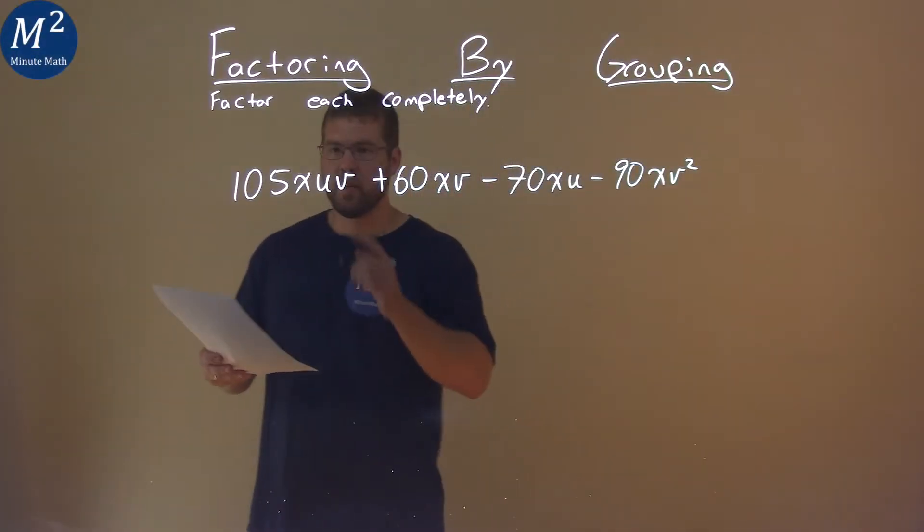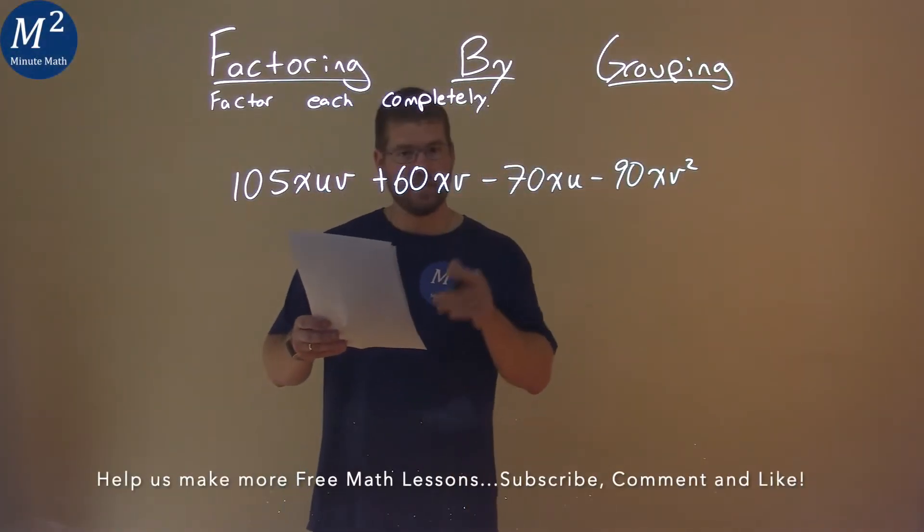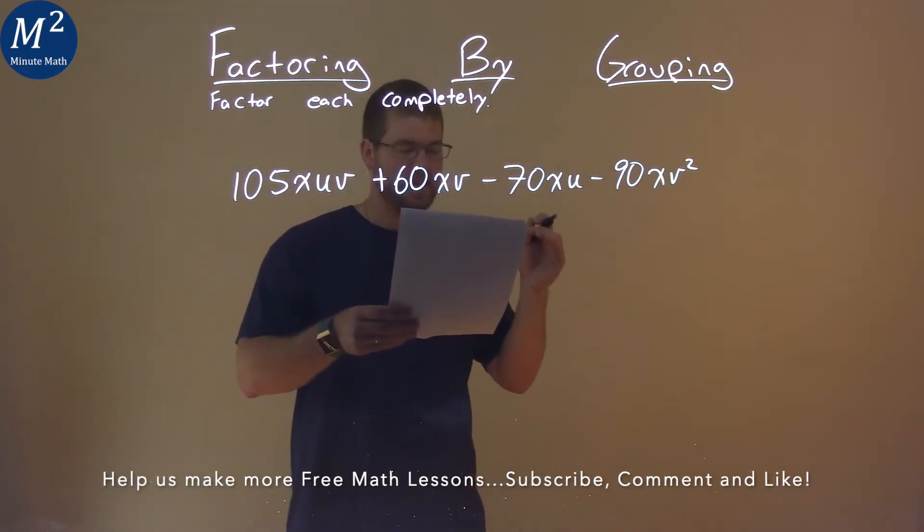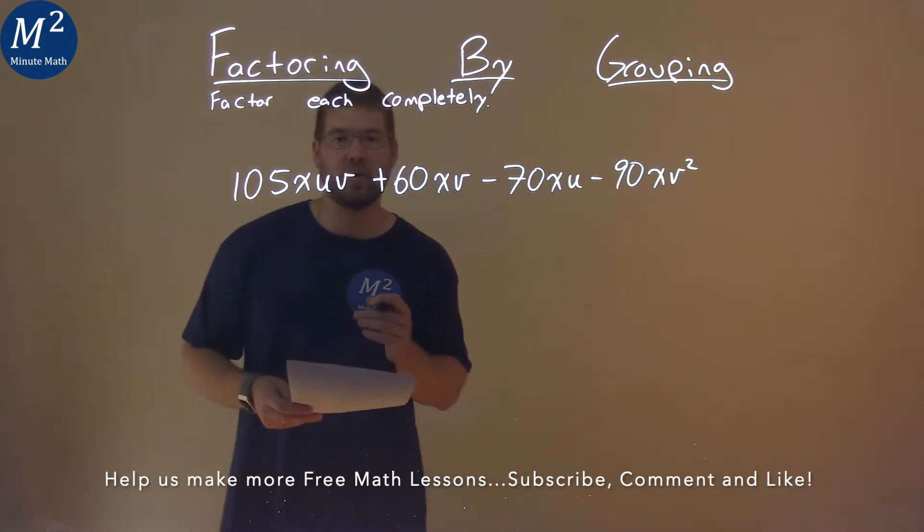We're given this problem right here: 105XUV plus 60XV minus 70XU minus 90XV squared, and we need to factor this completely.